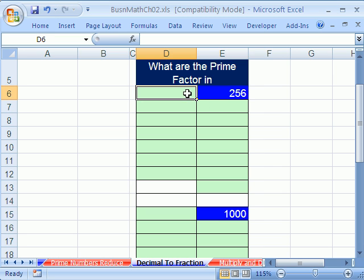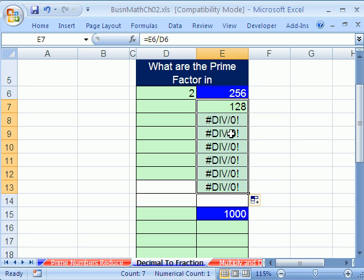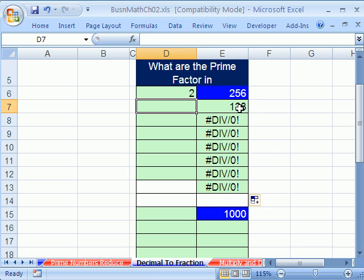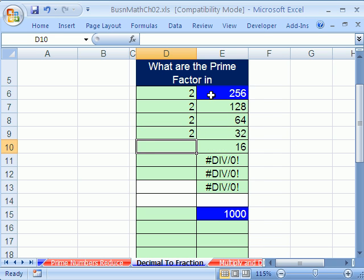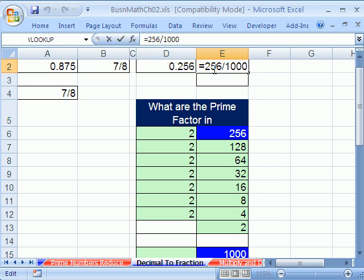So we'll have Excel help us. We just did this a second ago. We'll start with 2. And then our formula will be equals this 256 divided by this. Now I'm going to copy this down here. We can see that 128 is even. So we'll type a 2 there. 64 is even. 2. 32 is even. 16, 8 is still even. 4 is even. Look at that. 256 is a bunch of 2s. 1, 2, 3, 4, 5, 6, 7, 8. So we have eight 2s. And that would be in the denominator.